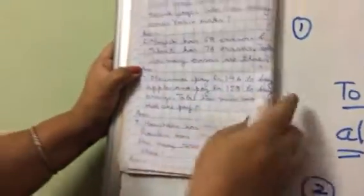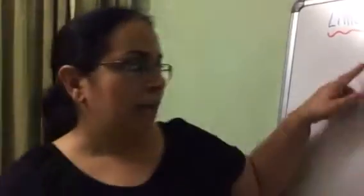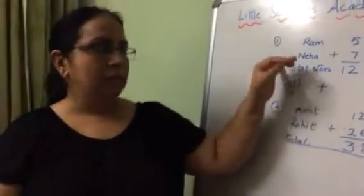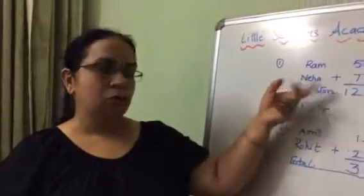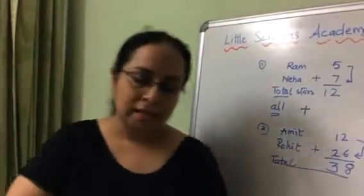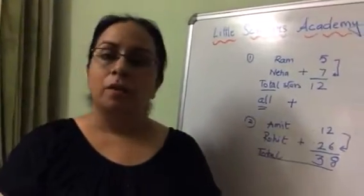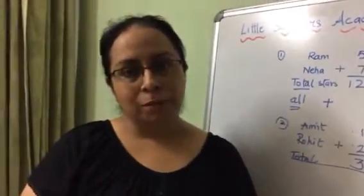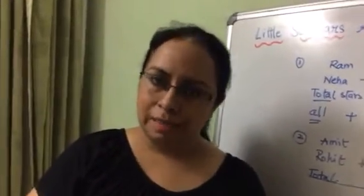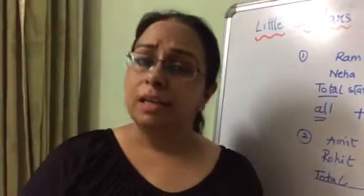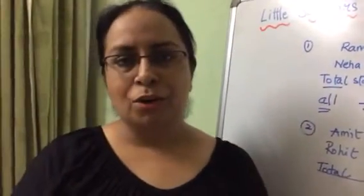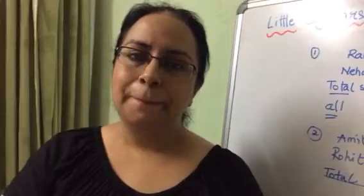So aapko ye joh questions hai, ye nahin likhne hai, sirof answers likhou, joh aapke answer number one, answer number two, jaysay se mein nahe likhha hai. Or ye hain likhou, ram ke paas kitnay toffees hai, niha ke paas kitnay toffees hai, or total stars ya toffees kitnay hai. So aise achche se aap apna work karo, aur me ko send karo. Kuch problem hai in case you don't understand anything, watch the video again. Still if you have problem, give me a call. Alright. Okay. Bye.